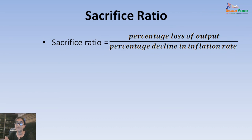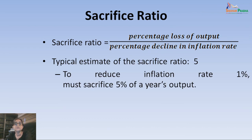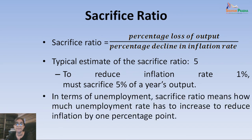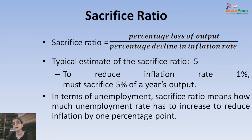A typical estimate of the sacrifice ratio is 5. This means in order to reduce the inflation rate by 1%, you have to sacrifice 5% of one year's output — that is the typical estimate for the US. In terms of unemployment, the sacrifice ratio means how much the unemployment rate has to increase in order to reduce inflation by 1 percentage point. The sacrifice ratio takes its roots from the trade-off explained by the Phillips Curve.